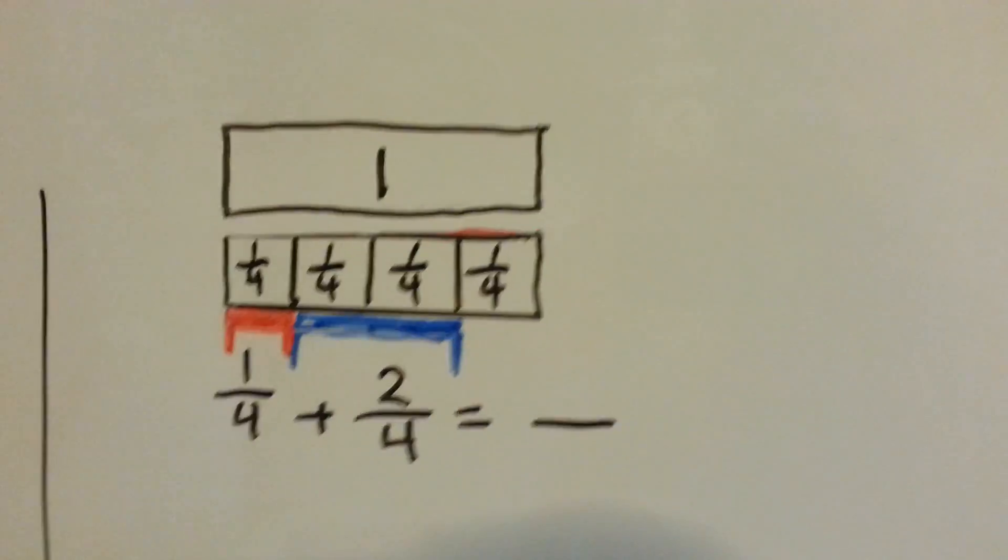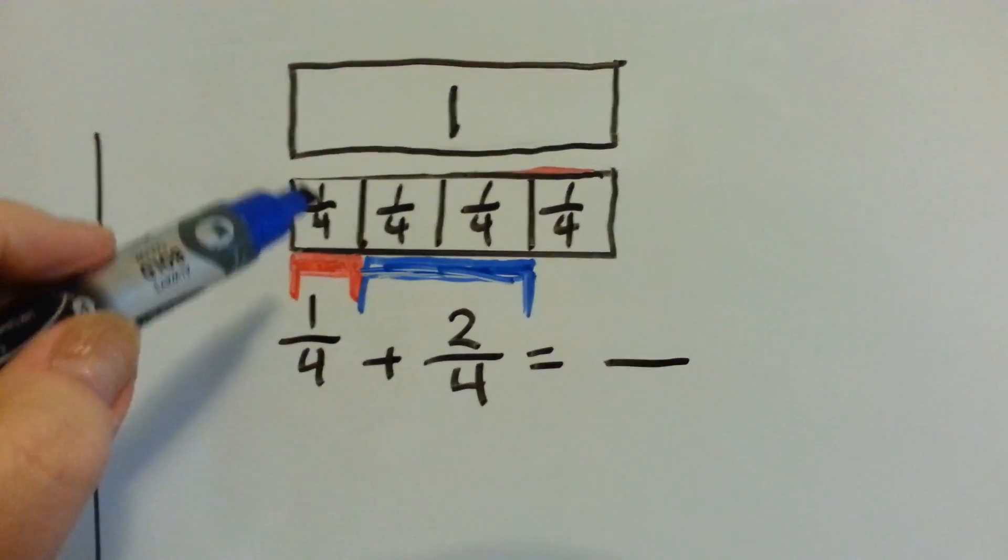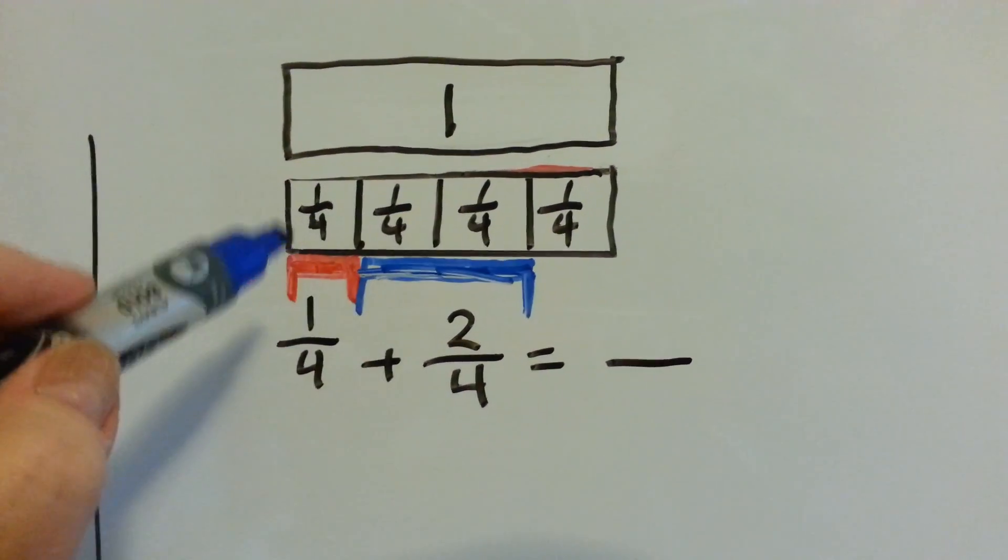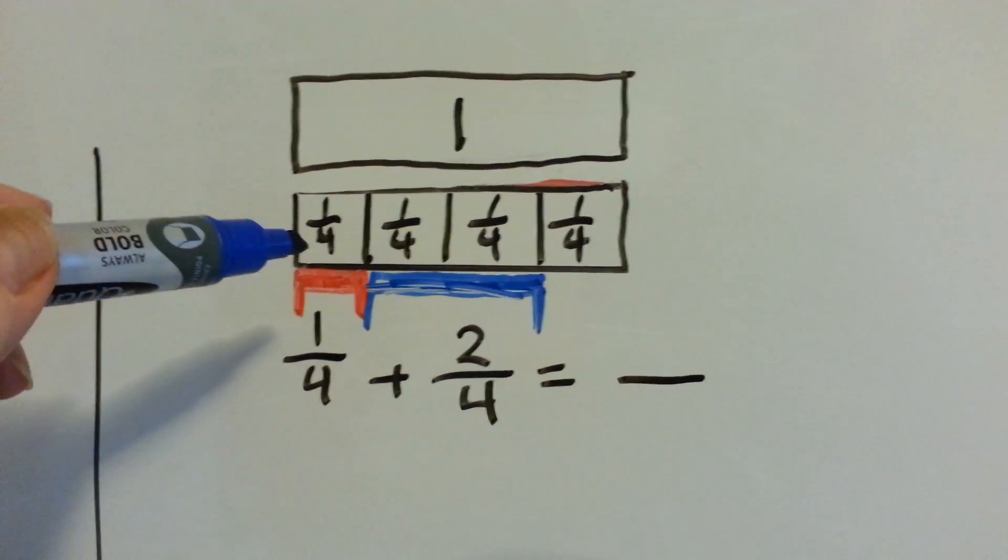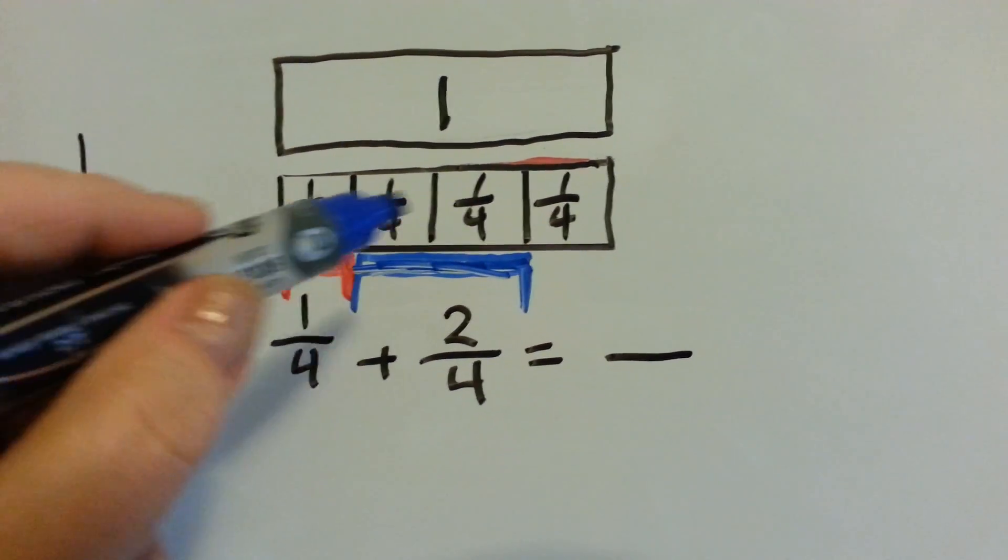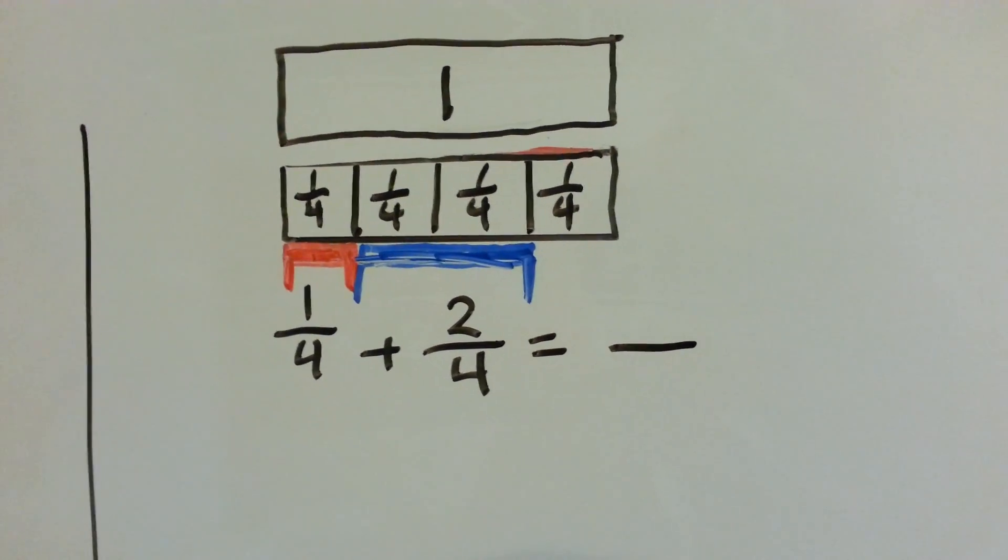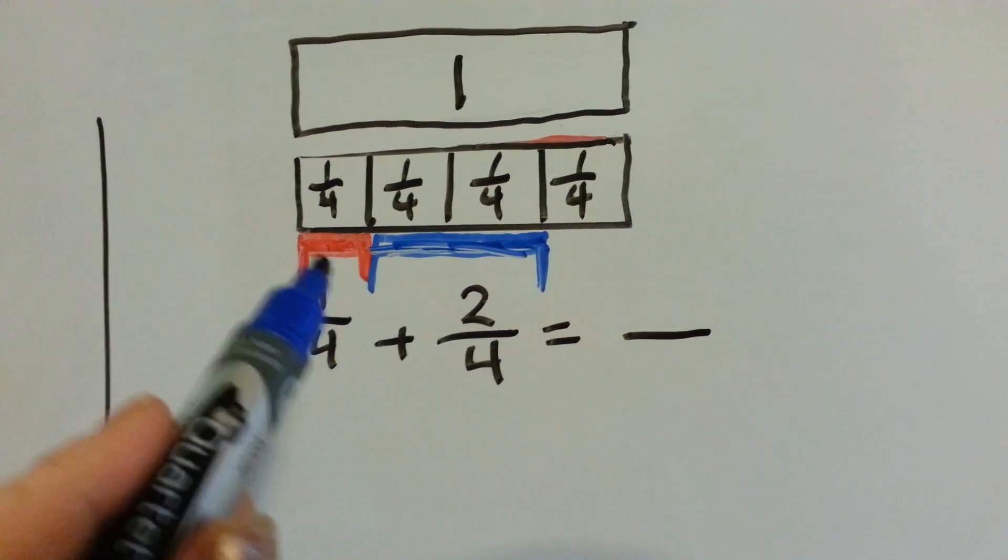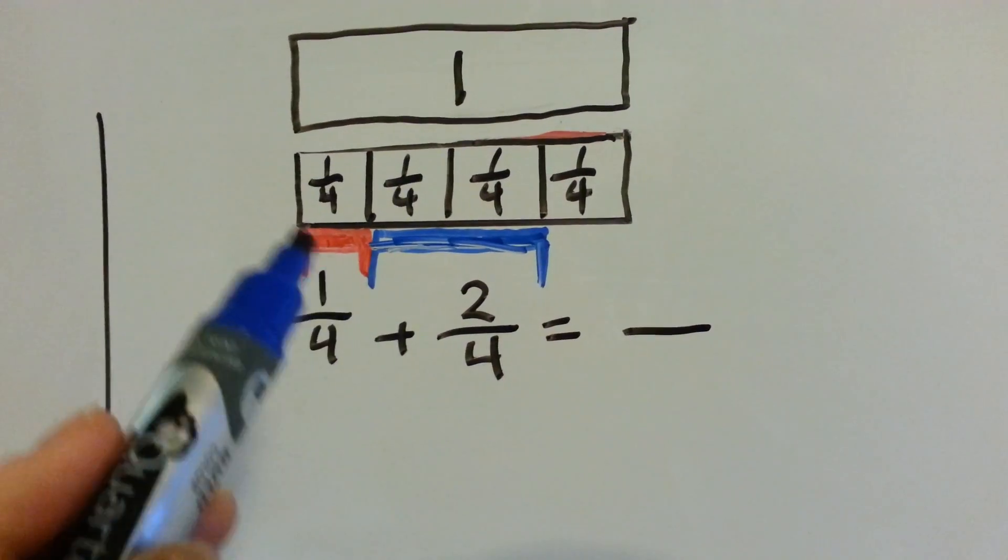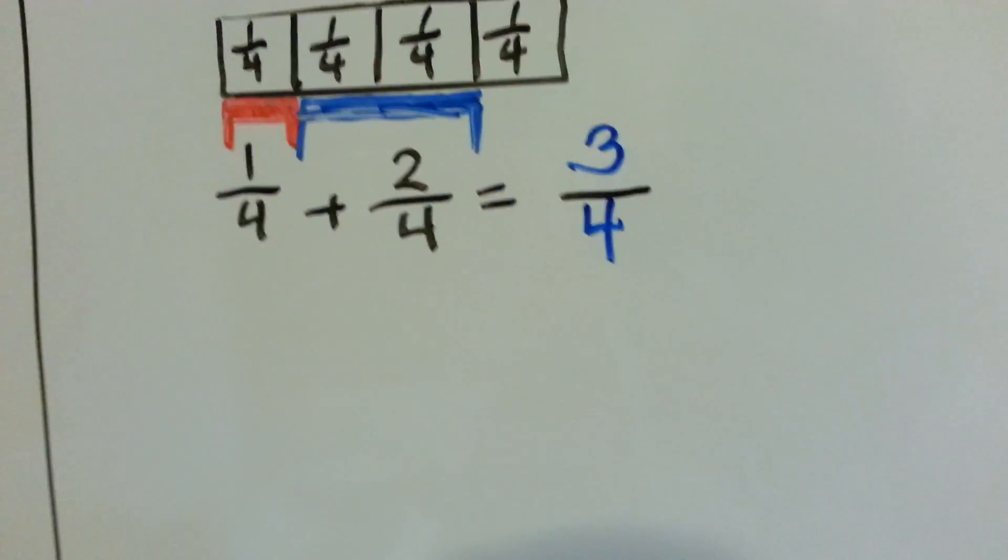Let's look at this one. If this is one whole and this is what fourths would look like compared to it, 1 fourth and then 2 fourths together would be 1, 2, 3 fourths. You add the numerator together and slide the denominator over, but it's 1, 2, 3 fourths.